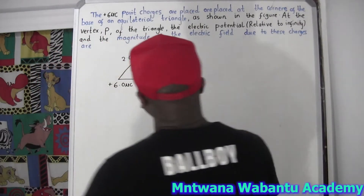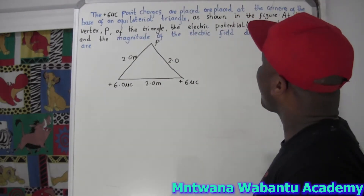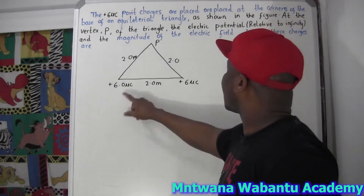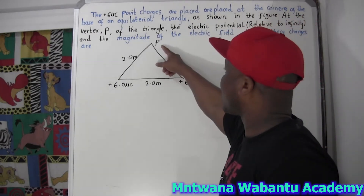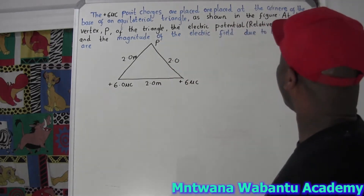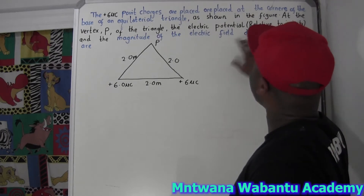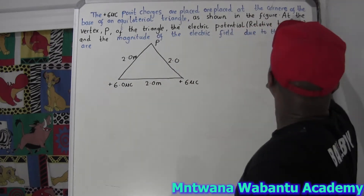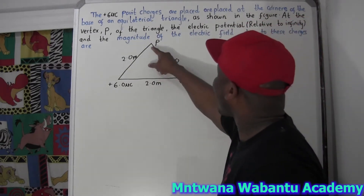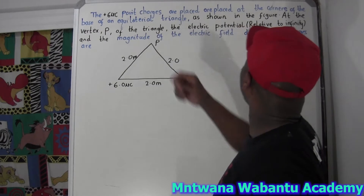This question has a positive 6 microcoulomb charge placed at the corner point — both of them positive, so six and six. From here to there we don't know the distances. Let me show you a figure. This is the vertex P — the corner of the triangle.